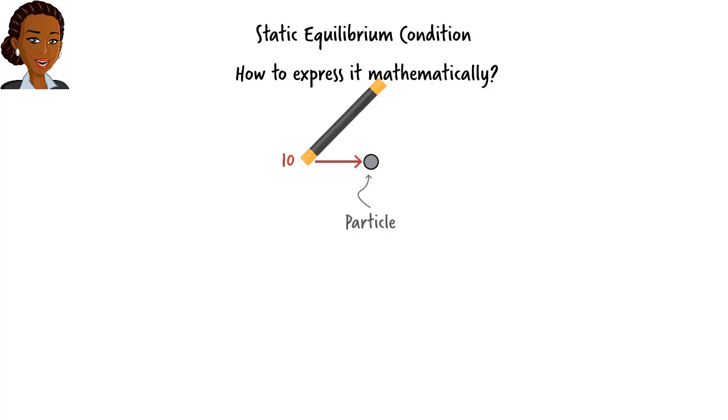Consider this particle. For it to remain at rest, for the particle to maintain its static equilibrium, the net force acting on it must be zero. A non-zero net force would cause the particle to move. Therefore, given a particle subjected to two or more forces, we can write the condition of static equilibrium this way. This equation states that for the particle to be in equilibrium, the net force vector acting on it must be zero.